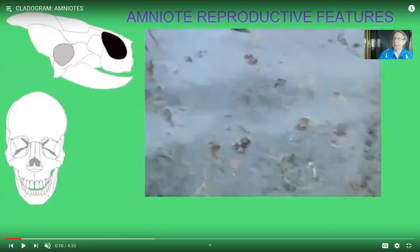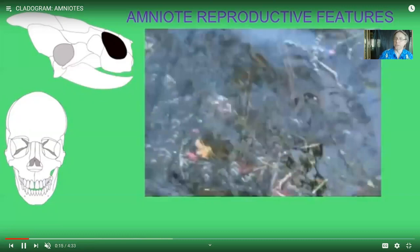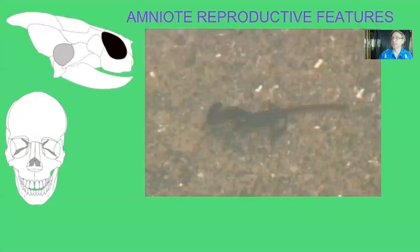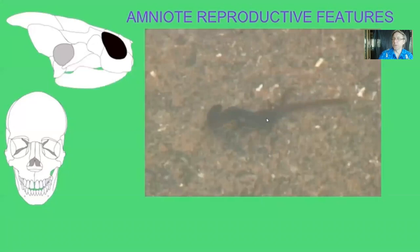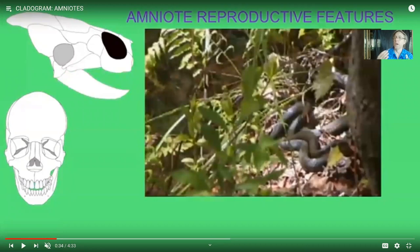Reptiles, in addition to mammals and birds, are called amniotes. If you look at these toads, they are reproducing in water and are dependent on water. Many amphibians breathe through their skin significantly — some salamanders even lack lungs. Many reproduce in water, lay their eggs in water, and their larvae develop in water. Because amphibians are dependent on water, this limits the success they can have in terrestrial environments.